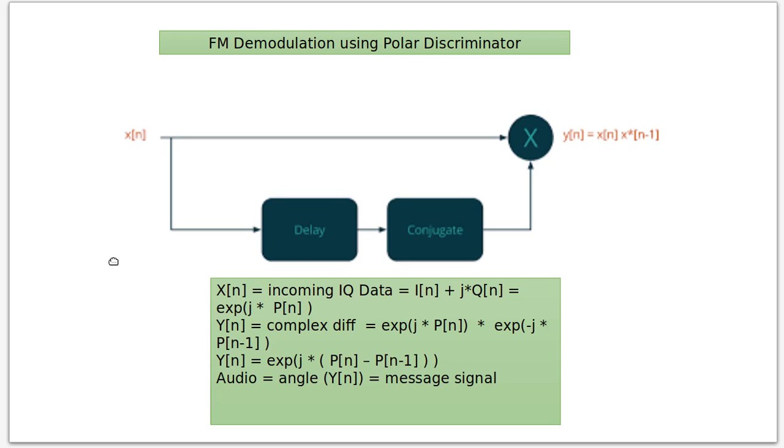And then we multiply those two things together, and what that's doing is giving us a type of differentiating the signal if you will. And since we simply care about the phase term, that's why after this we're going to take the angle to extract the audio that's in the FM signal.